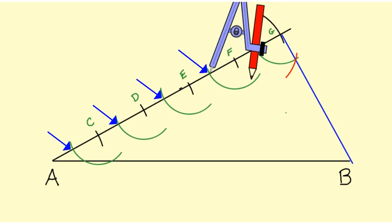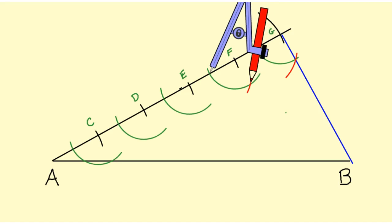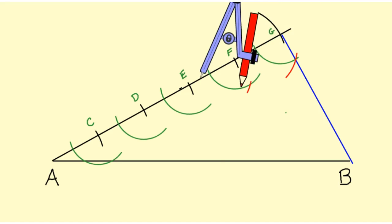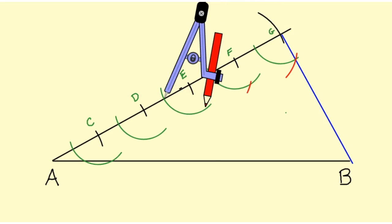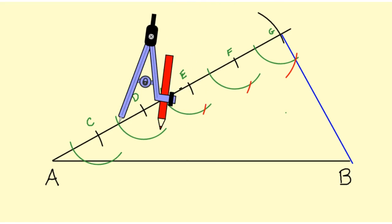Don't put the point of your compass at the lettered points C, D, E, F, and G. Put the point on where the arc intersects that ray, and then find your point of intersection. Move it down to the next arc, mark it off, move it down to the next arc, mark it off.